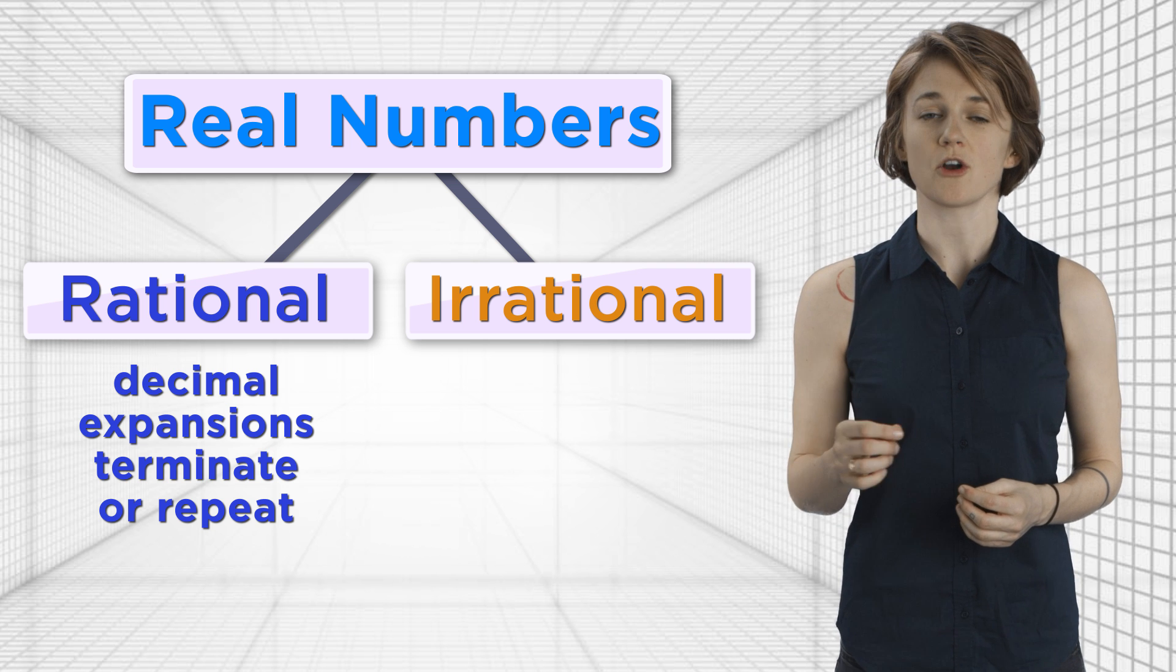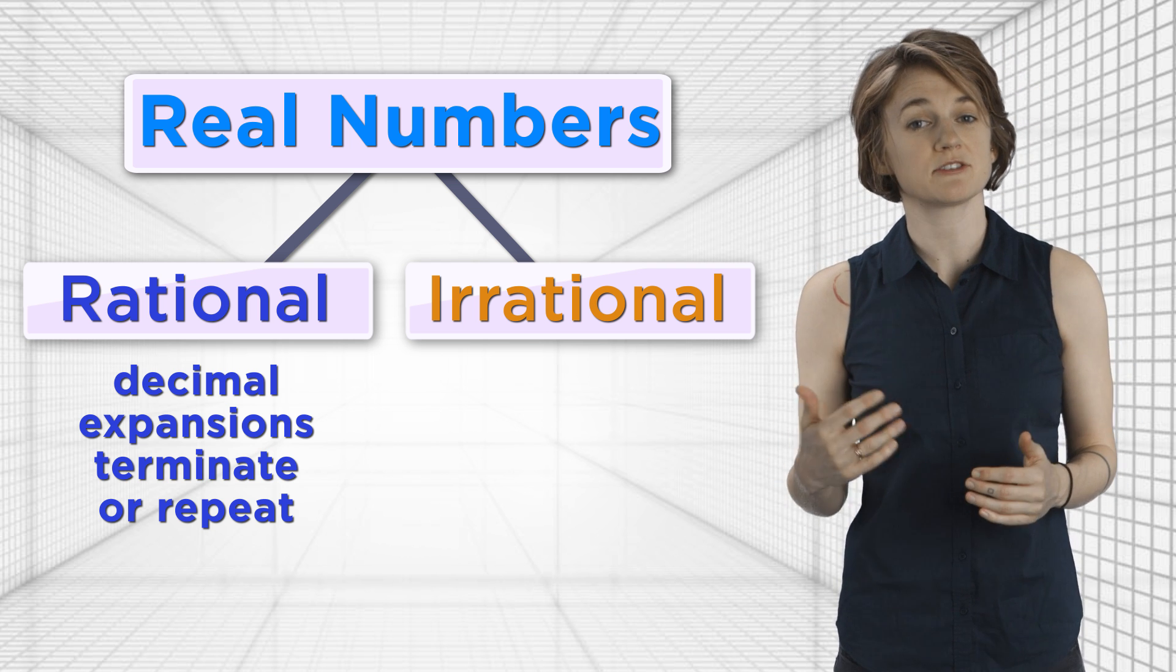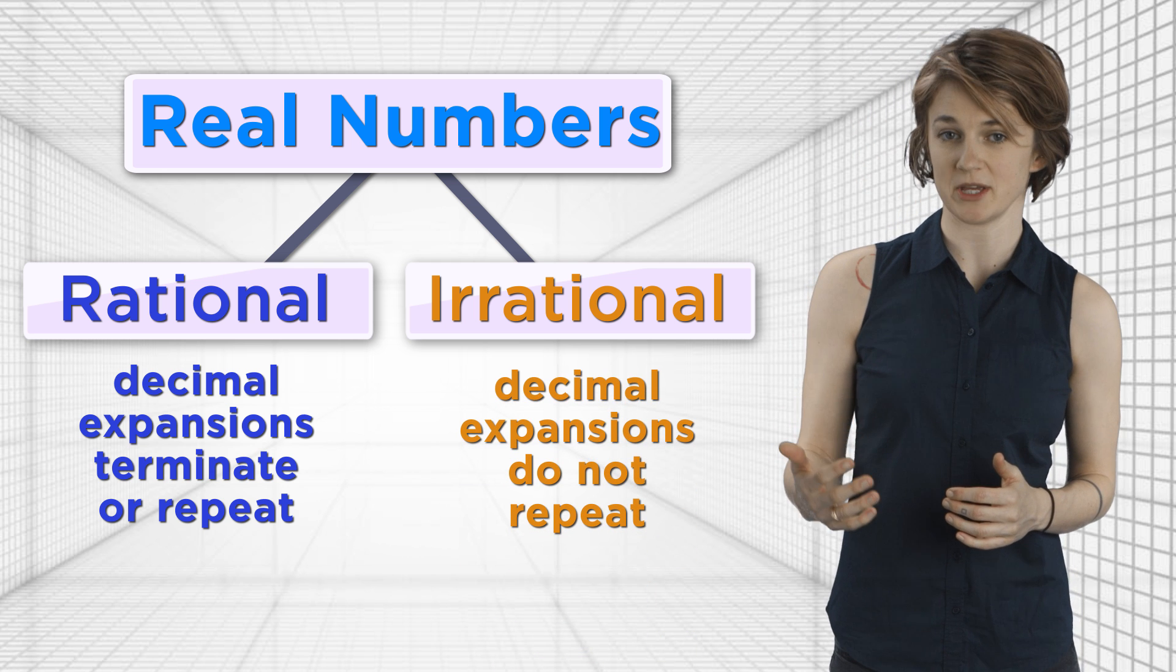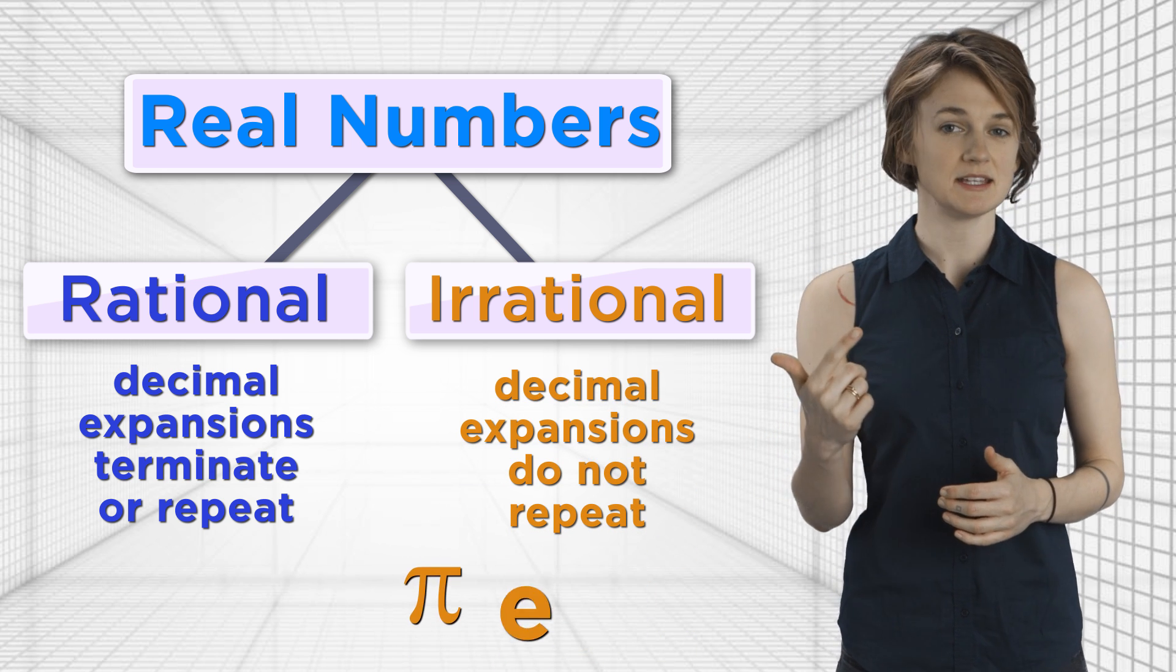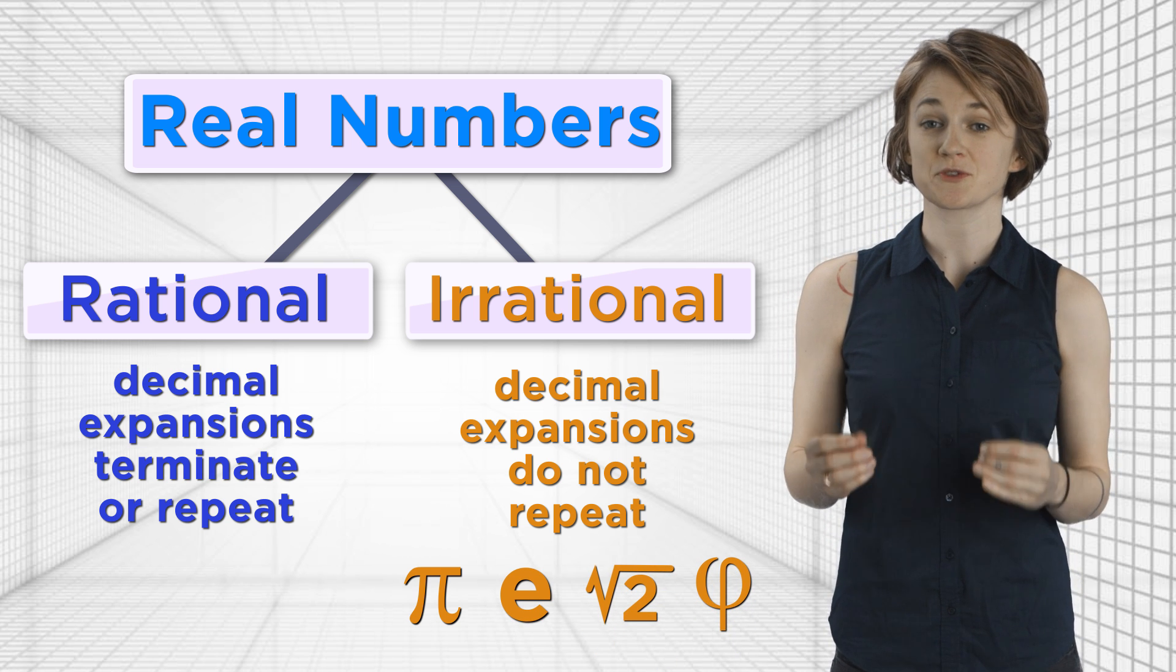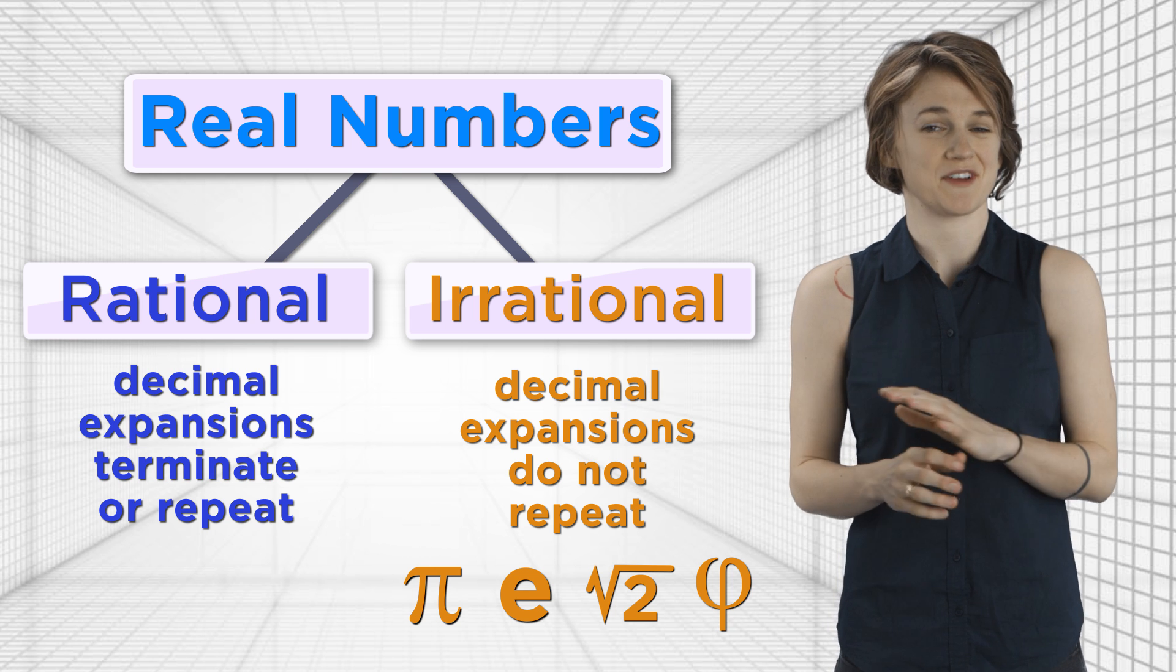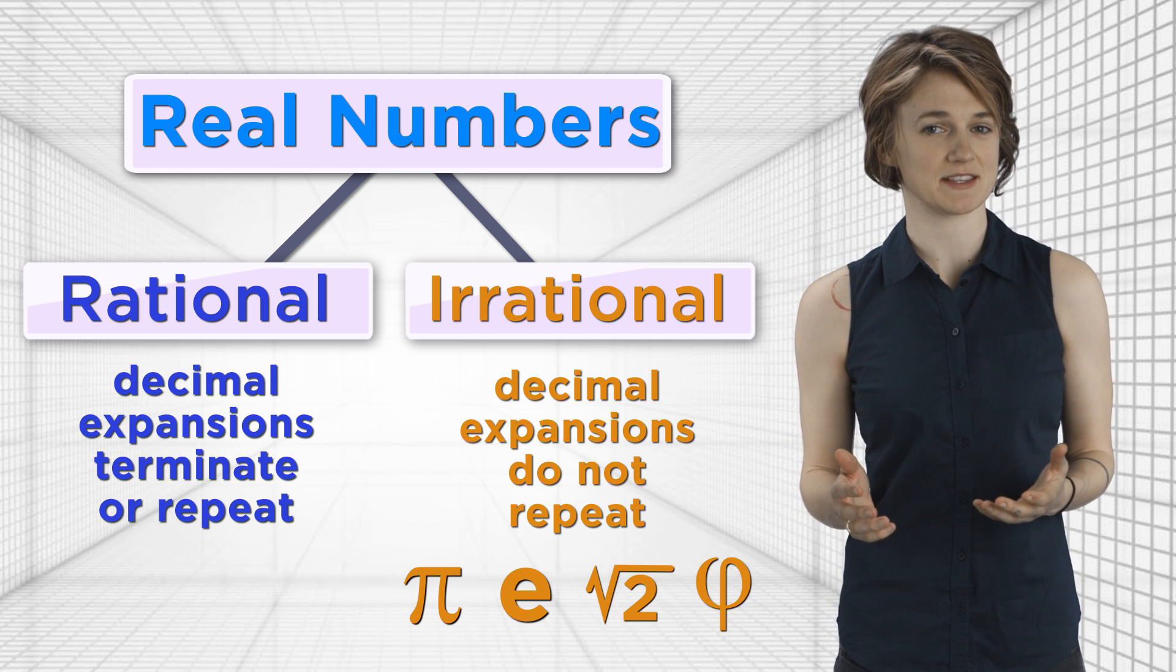Irrational numbers are all the real numbers that aren't rational, meaning their decimal expansions don't repeat. Some well-known examples include pi, e, the square root of 2, and the golden ratio. Actually, the proof that the square root of 2 is irrational is a fantastic classic. You can try it for yourself or check out the link in the description.